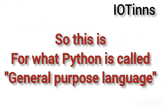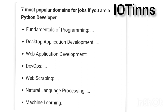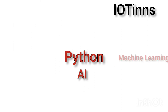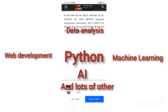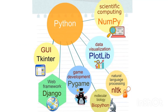Python can be considered a general purpose language because it can be used in many domains, including web designing, web development, scientific computing, artificial intelligence, and machine learning. There are many libraries available for use across different applications and various domains.